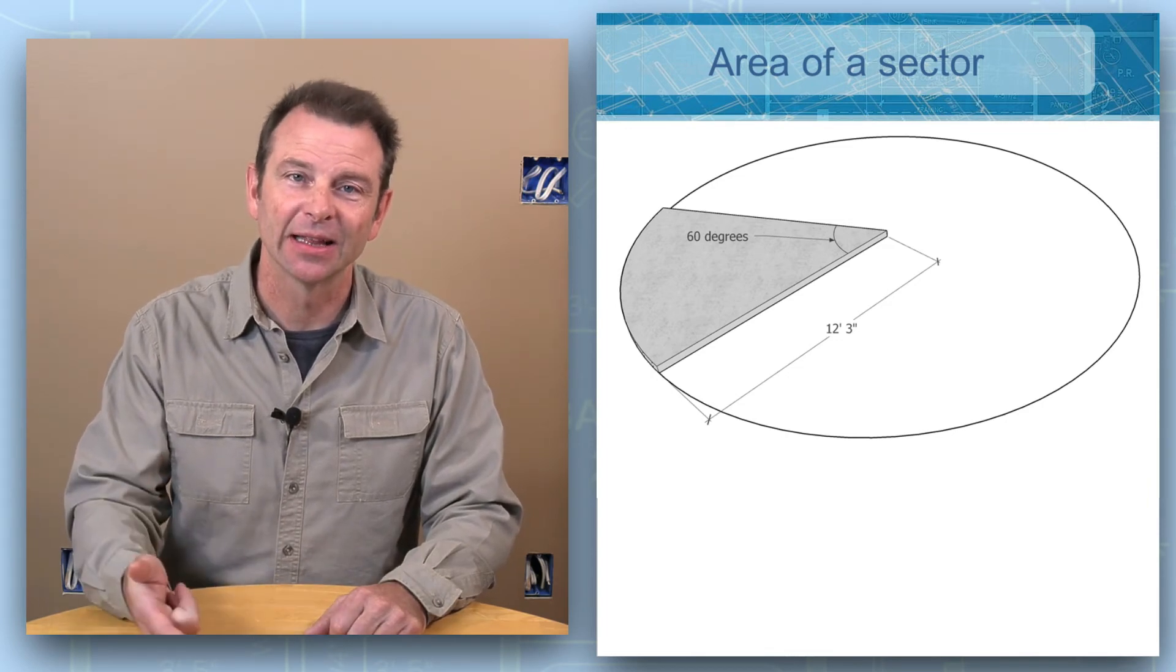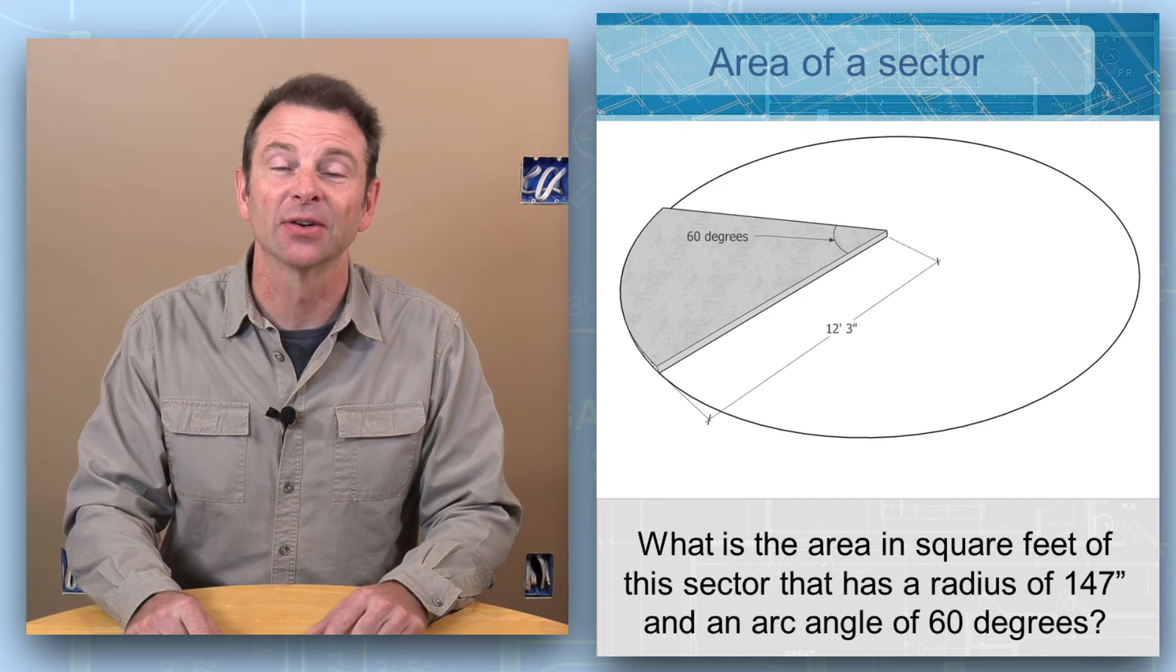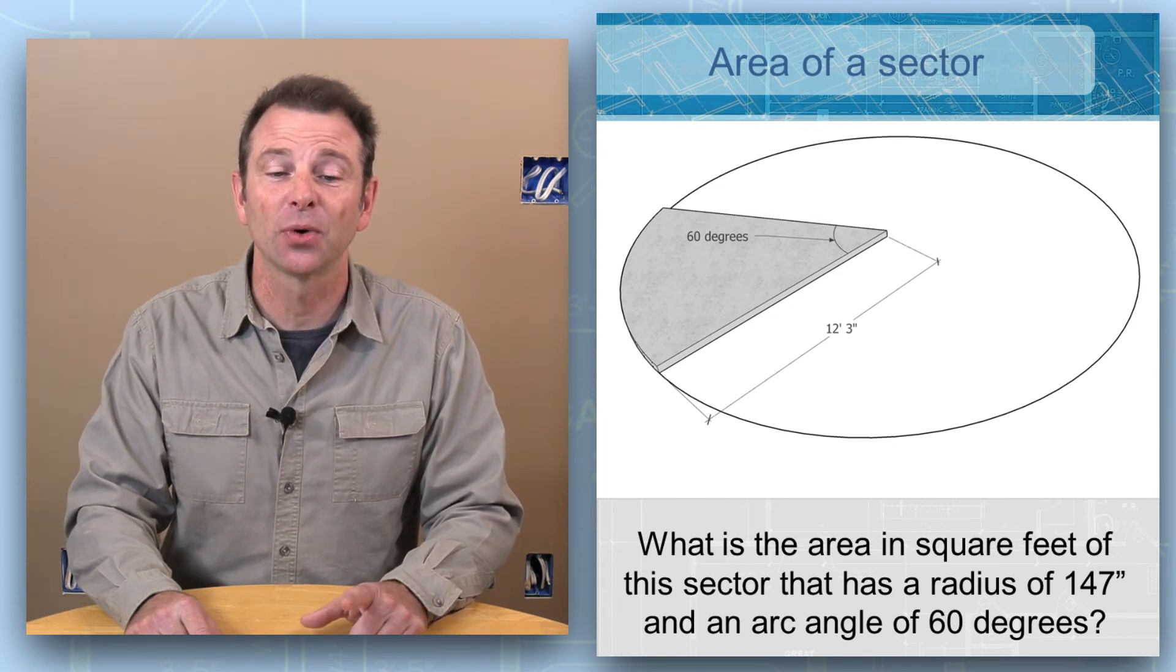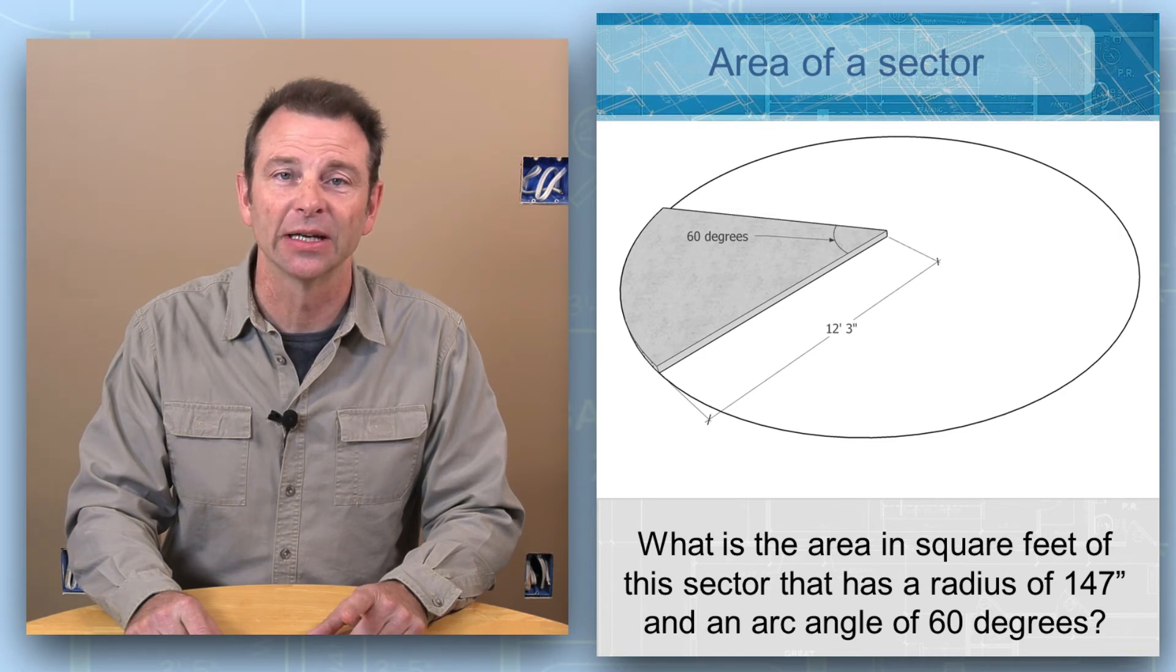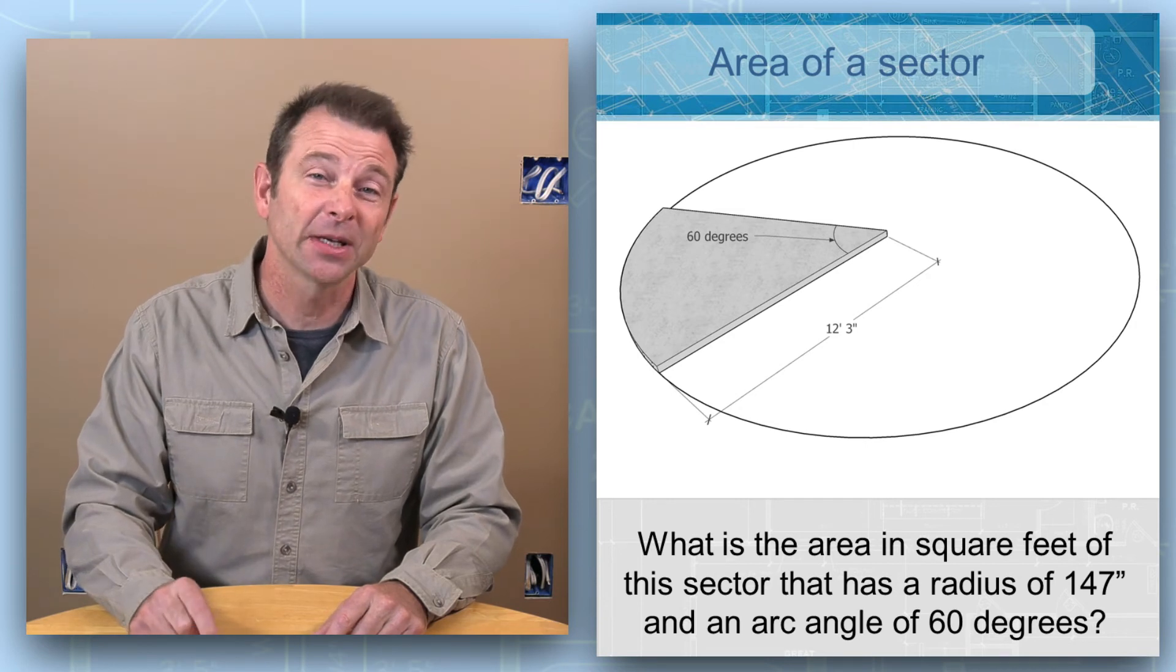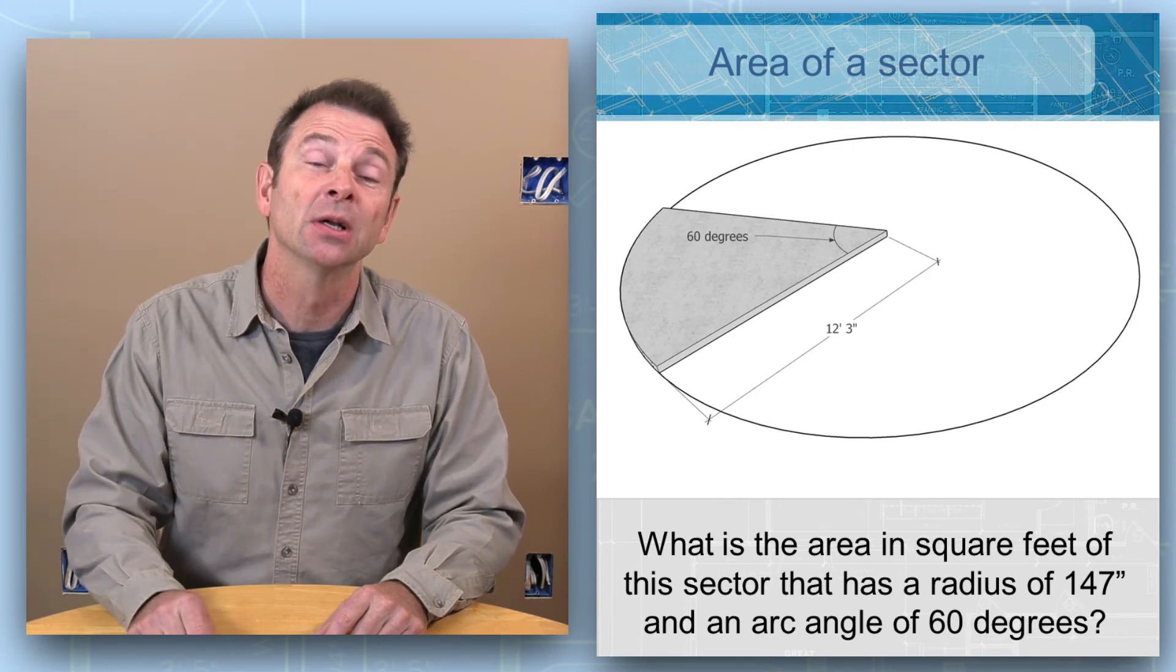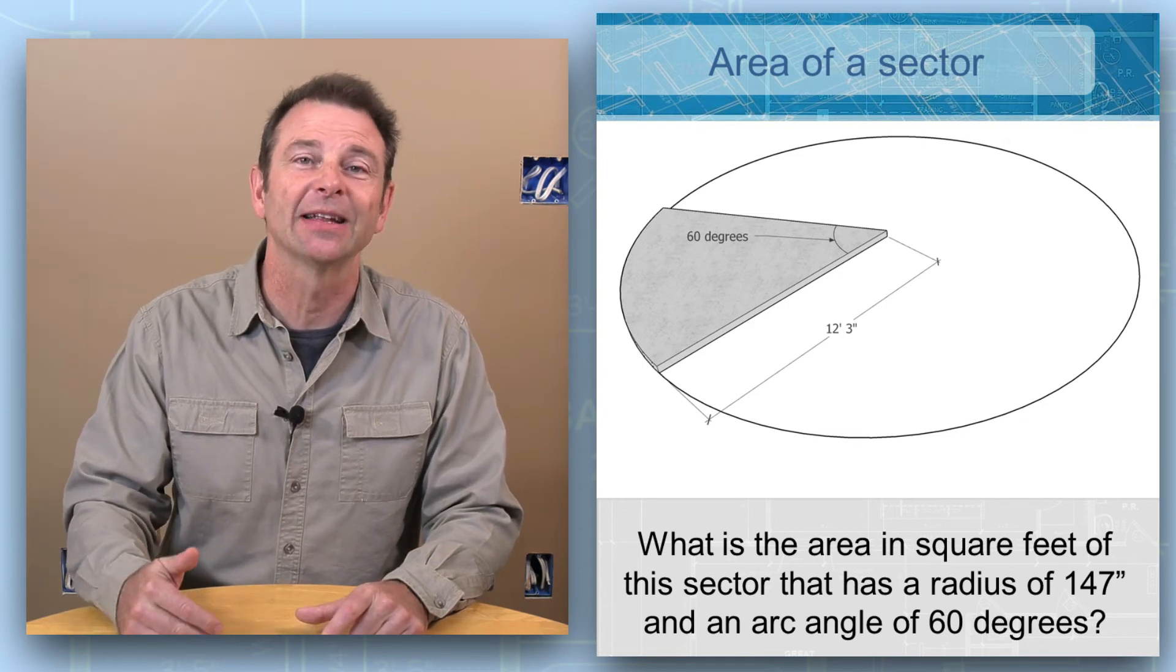In this case the problem goes like this: What is the area in square feet of this sector that has a radius of 147 inches and an arc angle of 60 degrees? So we have some information that we know here we can plug into our formula.